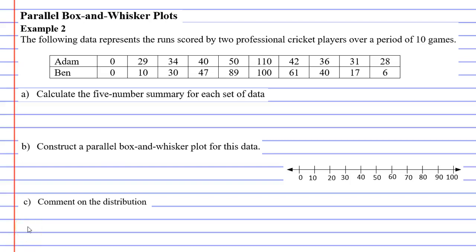All right, so we're going to do another example where we construct a parallel box-and-whisker plot. This time we have some different data that we actually have done previously in a previous example, except in that one we didn't do a box-and-whisker plot. So this following data represents the runs scored by two professional cricket players over a period of 10 games. We have Adam and Ben, and we need to calculate the five-number summary for each set of data first.